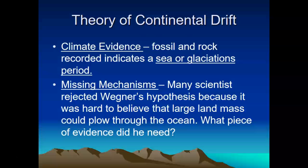Many scientists rejected Wegener's hypothesis because it was hard to believe that a large landmass could plow through an ocean. But now we know that happens. We have satellite images of the ocean floor, we understand the law of superposition, and with absolute age dating using radioactive decay, we can look at many different things and really contribute to the idea that these plates were once much closer together. We'll even show evidence of how some plates are going to start breaking apart differently as we move forward.